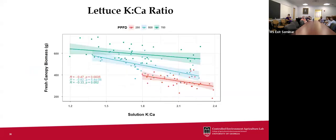We also examined how cation ratios impact nutrient availability. Looking at the potassium-to-calcium ratio in solution and its impact on fresh canopy biomass, there was a low-to-moderate relationship. Within each PPFD level, solutions tended to show a negative relationship — lower potassium-to-calcium ratios tended to be associated with higher yield.